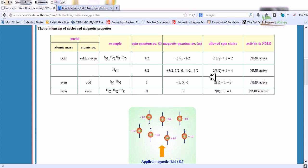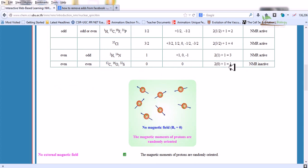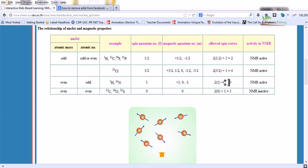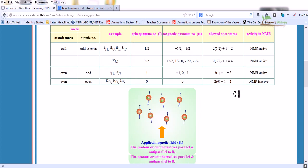Any molecule, if they have the allowed spin state only 1, must not be NMR active. So C12, O16 and S32 showing only one allowed spin state will be NMR inactive.